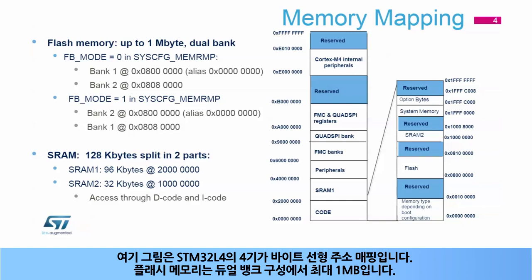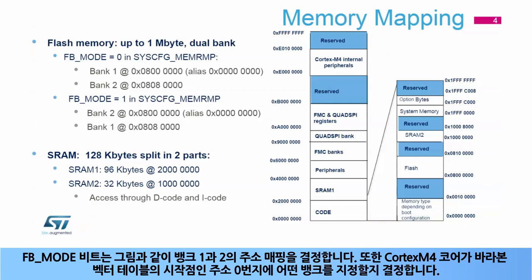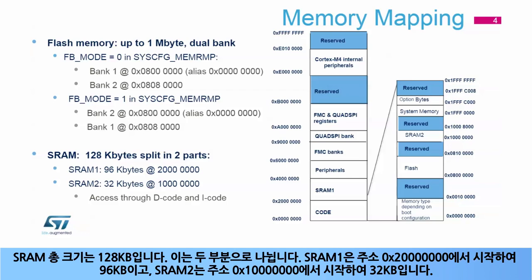The flash memory is up to 1MB in a dual bank configuration. The FB Mode bit determines the address mapping of banks 1 and 2, and also determines which bank is aliased to address zero, which is the start of the vector table as seen by the Cortex-M4 core. The total SRAM size is 128 kilobytes, split into two parts: SRAM1 is 96 kilobytes starting from address 0x20000000, and SRAM2 is 32 kilobytes starting from address 0x10000000.